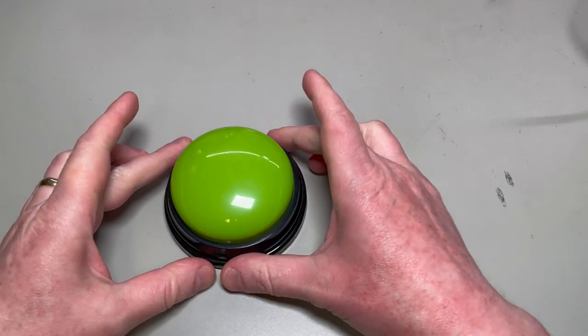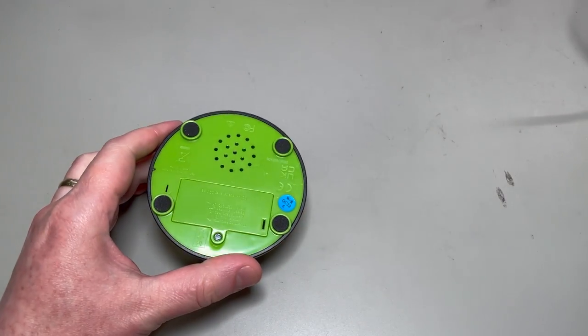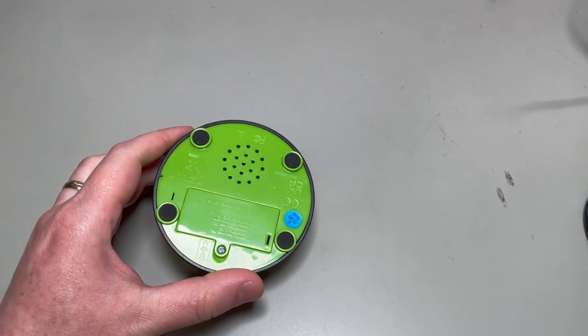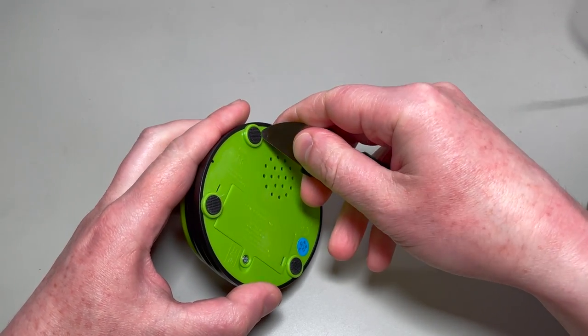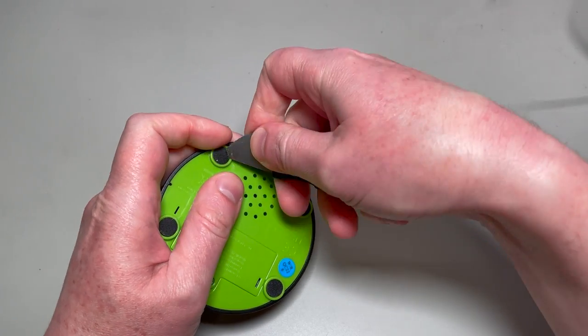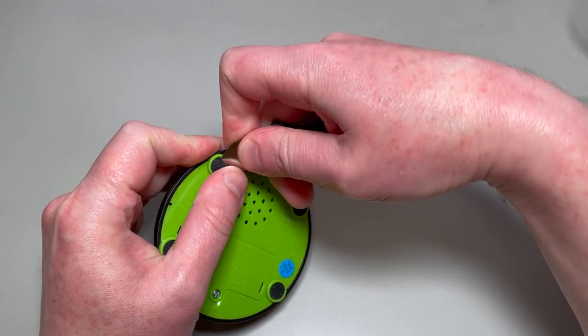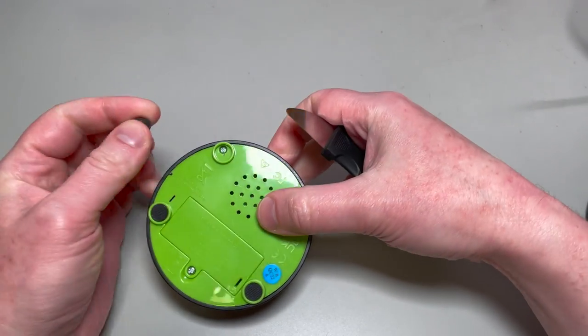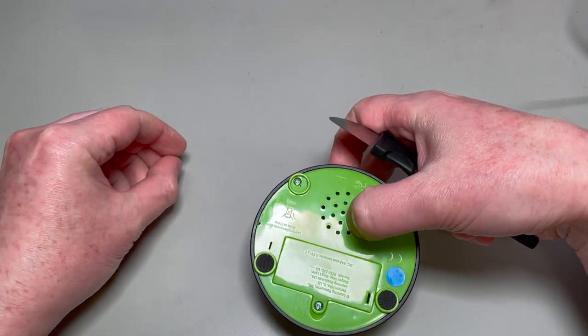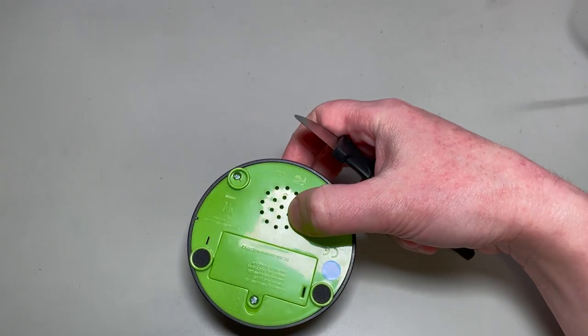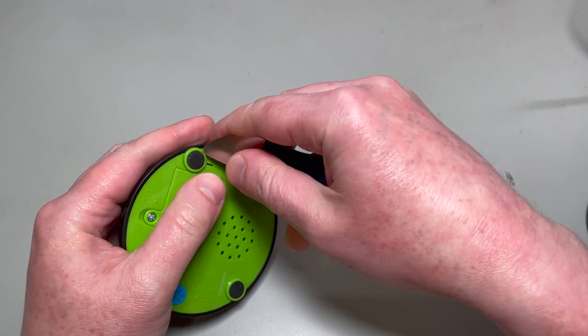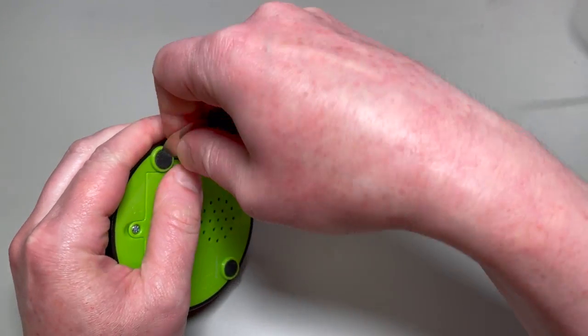All right, here we go. First thing we're going to do is take this button apart. Get your spudger or flathead screwdriver and we're going to pry out these little rubber feet. They're held in there with an adhesive. This gives us access to the screws. Set these aside, make sure not to lose them. I like to set them sticky side up so that it will remain sticky.